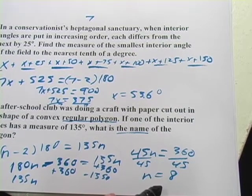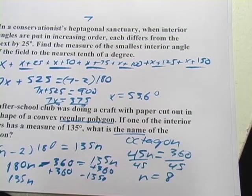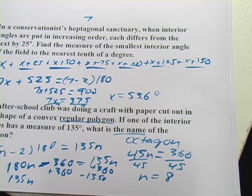So the name of this is an octagon, an eight-sided polygon. So that's a little bit of work with word problems with polygons.